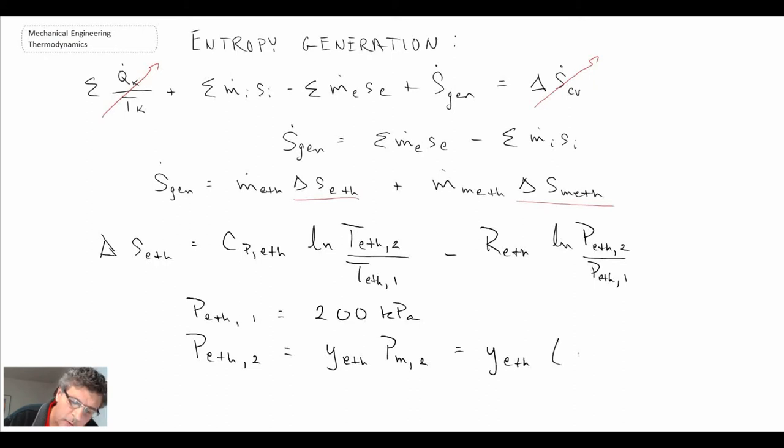And then that will be multiplied by the mixture pressure at state two. And we were told the mixture pressure leaving, or for a mixing chamber it won't change. It will always be the same. So you'll have 200 kPa coming out. But we need to know the mole fraction there.